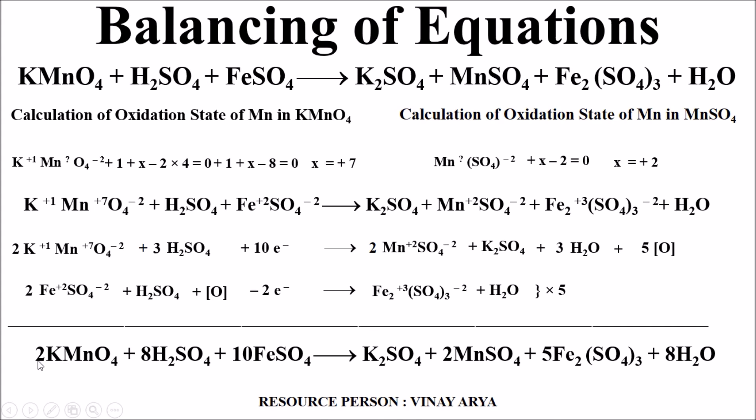Now here 2 potassium, here also 2 potassium, manganese are 2 in reactant side, manganese are 2 in the product side, oxygens are 8 in KMnO4 while oxygens are 8 in water. In sulfate, 8 sulfates in H2SO4 and 10 in FeSO4 becomes total 18. Here in product side, sulfate of K2SO4 is 1, MnSO4 is 2, plus 5×3 = 15. So 15 + 2 = 17, plus 1 = 18. So 18 on both sides. Similarly, iron 10, iron 10.